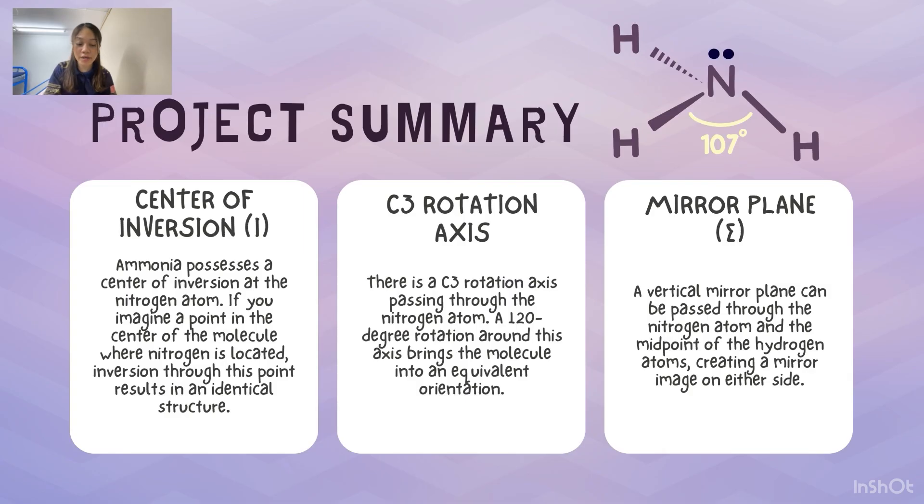Secondly, ammonia molecule has a C3 rotation axis. There is a C3 rotation axis passing through the nitrogen atom. A 120 degree rotation around this axis brings the molecule into an equivalent orientation.